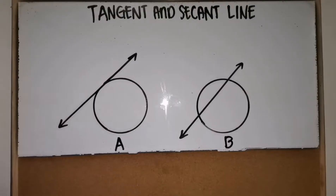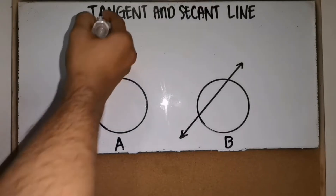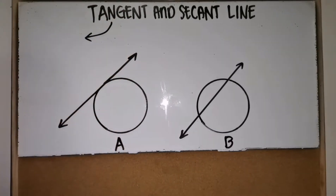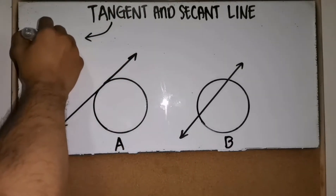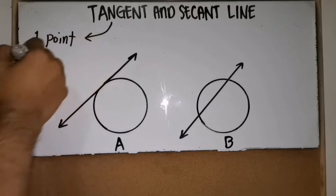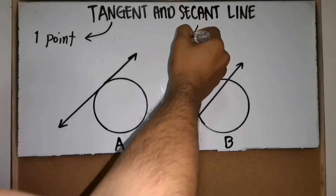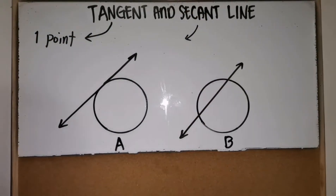Welcome back to my channel everyone. This time we will be talking about tangents and secants, so sit back, relax, and enjoy this video tutorial. A tangent line is a line that intersects a circle at one point, and a secant line intersects a circle at two points.